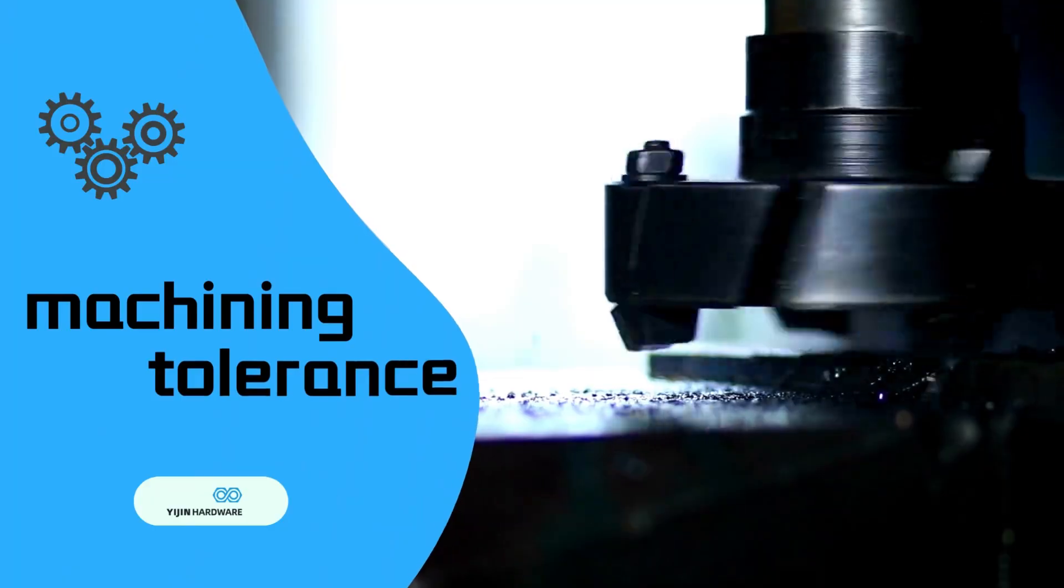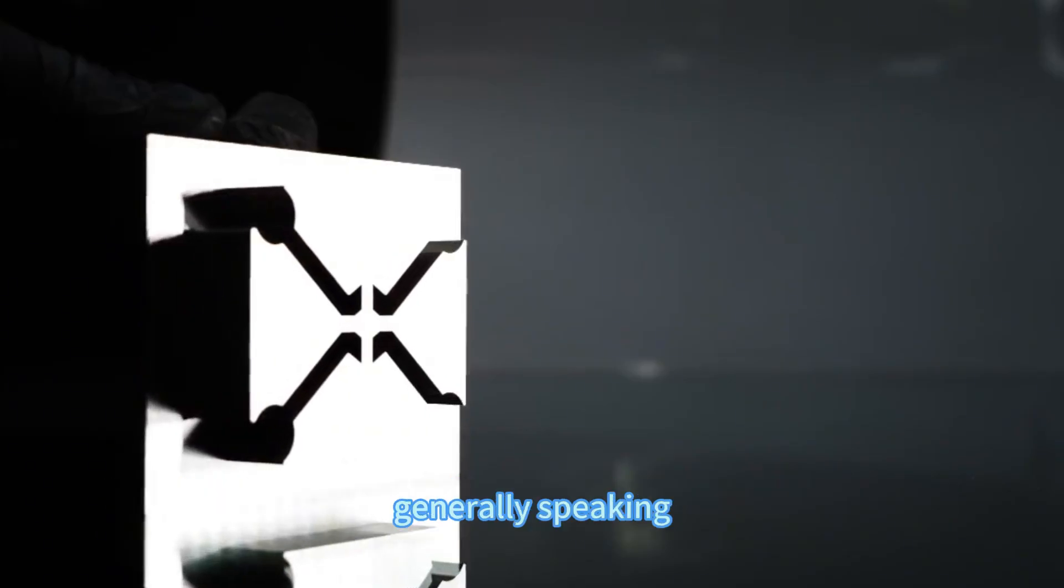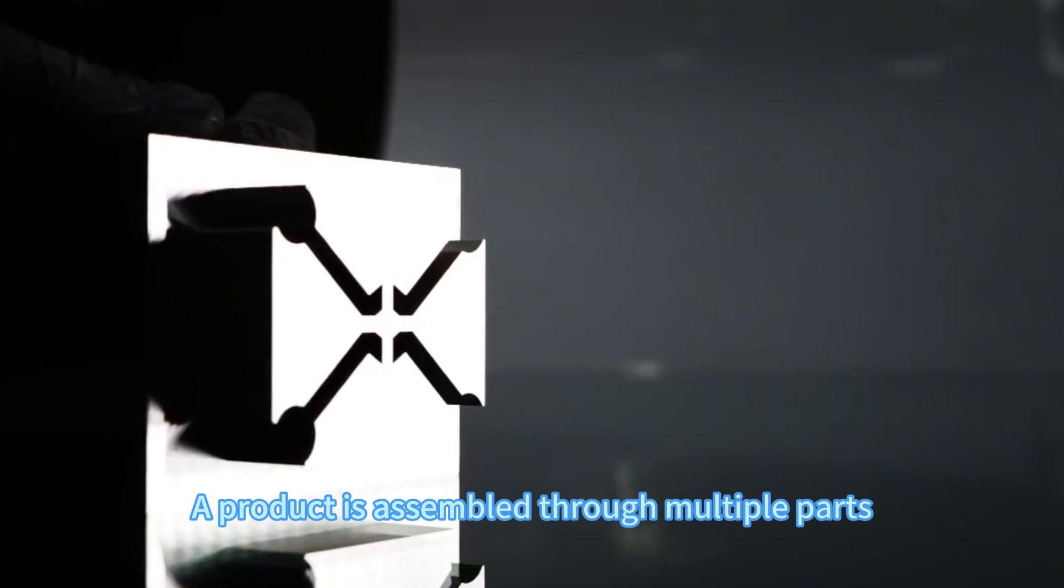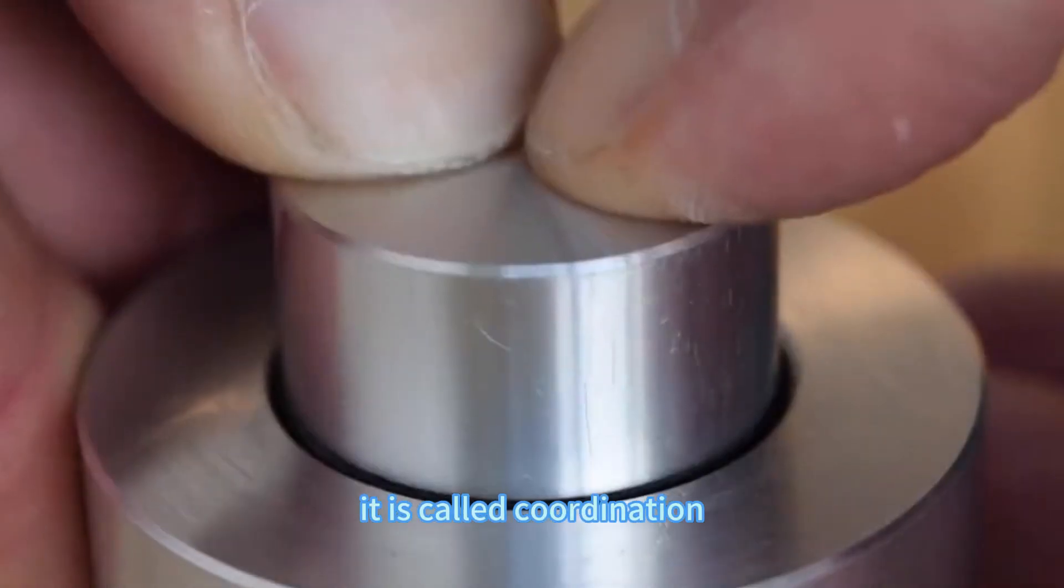Hello everyone, today's video we will take you through a comprehensive understanding of what tolerance is. Generally speaking, a product is assembled through multiple parts, and between parts the degree of tightness after mutual assembly in industry is called coordination.